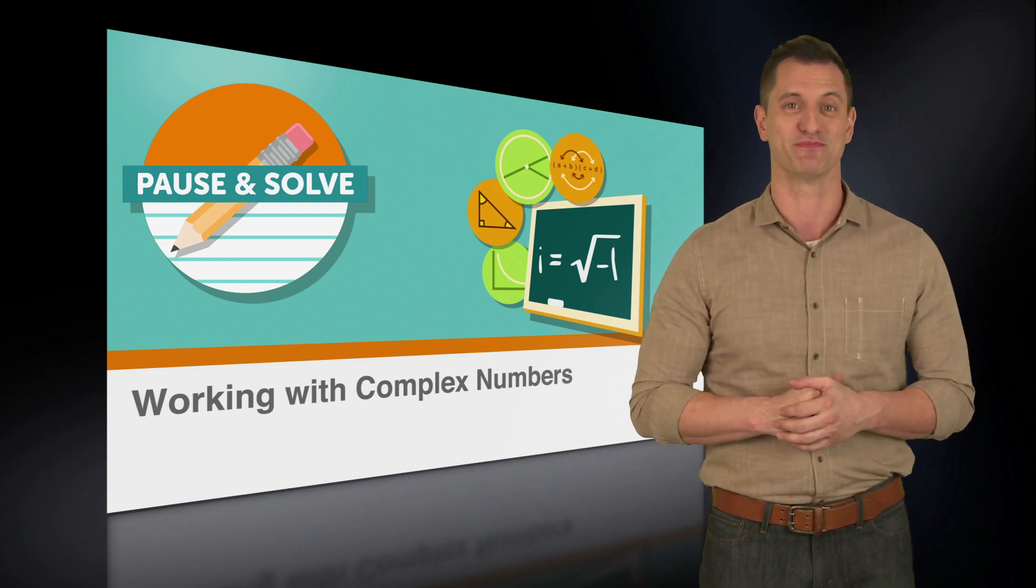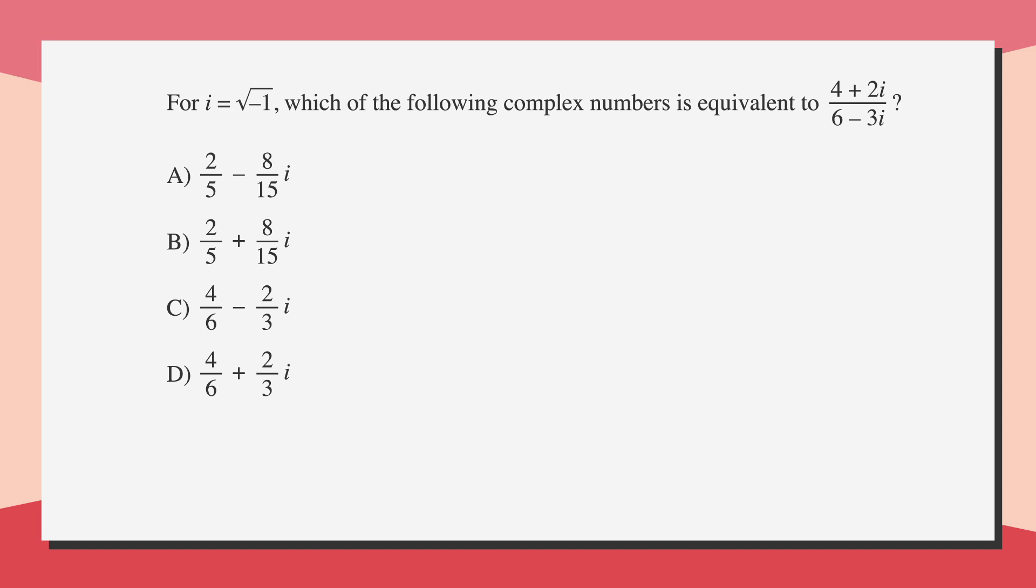Here's the question. For i equal to the square root of negative 1, which of the following complex numbers is equivalent to 4 plus 2i over 6 minus 3i? And these are our answer choices. It's up to you now. Ready, set, pause.